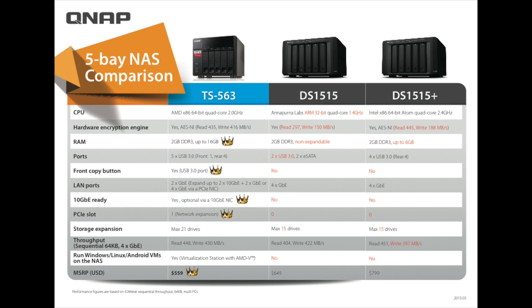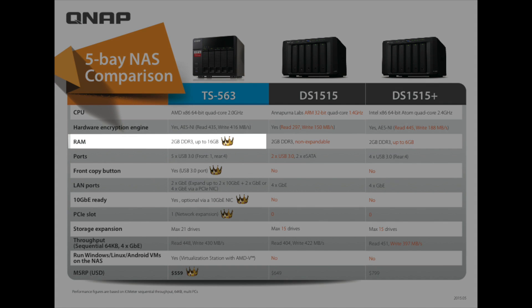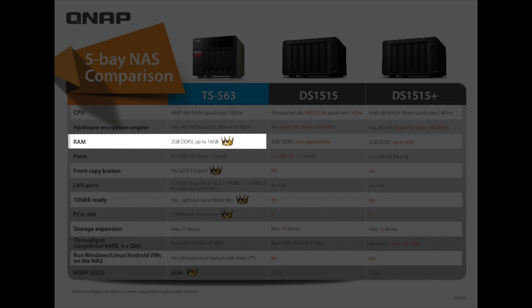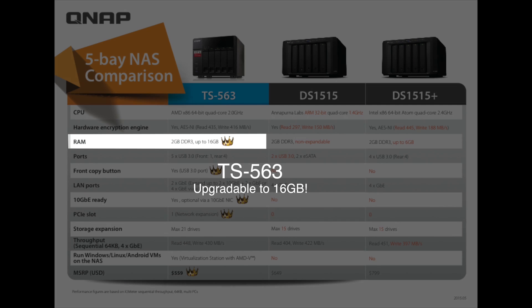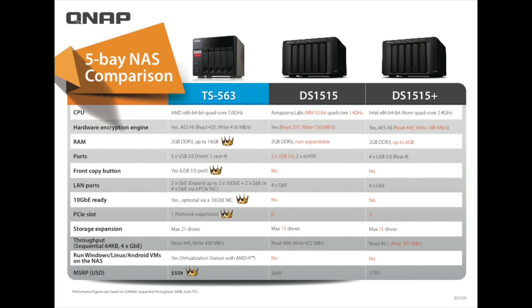Next, let's look at RAM — the memory in each of the units. The QNAP TS-563 comes with 2 GB of RAM and that's upgradable to 16 GB. The DS-1515 comes with 2 GB as well, but that's not upgradable. The DS-1515+ comes with 2 GB and is upgradable to 6 GB of RAM.